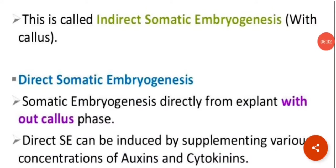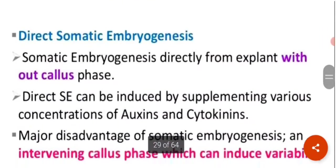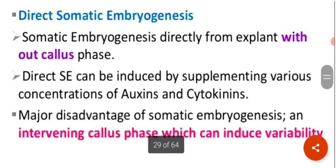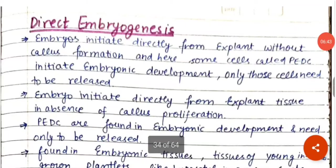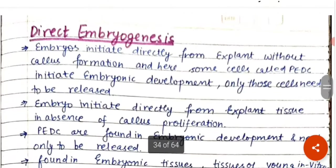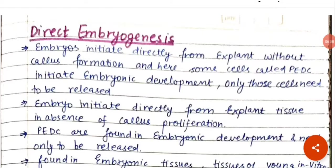What we have discussed is indirect somatic embryogenesis, where the callus is involved. There are two types of embryogenesis: direct and indirect. In direct embryogenesis, embryos initiate directly from the explant — there is no callus formation. The cells involved here are called PEDC: pre-embryonic determined cells, which initiate embryonic development.